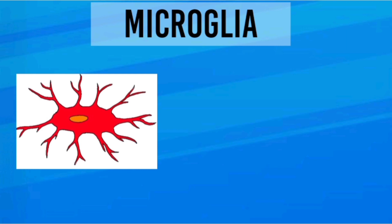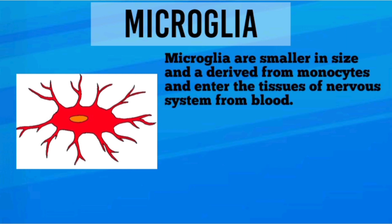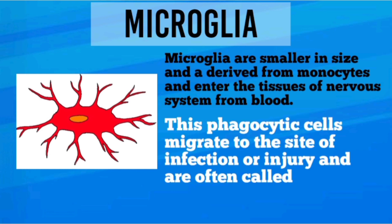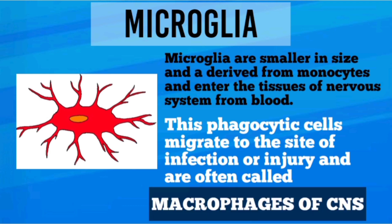Microglia are smaller in size and are derived from monocytes, entering the tissue of the nervous system from blood. These phagocytic cells migrate to the site of infection or injury and are often called the macrophages of the CNS.